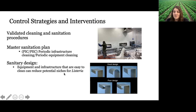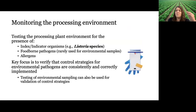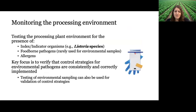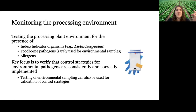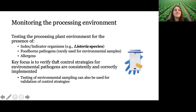As part of this control, you need to monitor the processing environment — typically done for Listeria species, an index organism for Listeria monocytogenes, though it can also be done for other foodborne pathogens and allergens. The procedure involves swabbing different areas of your facility to verify that cleaning and sanitation procedures are consistently and correctly implemented. Again, this is a verification strategy to confirm you're doing the right thing for cleaning and sanitation — not more important than the actual cleaning and sanitation itself.